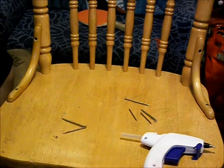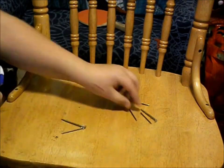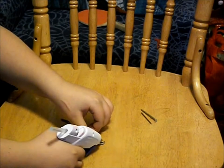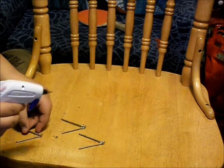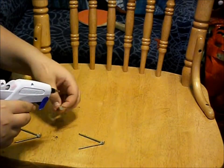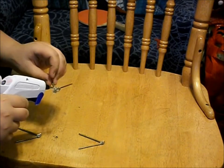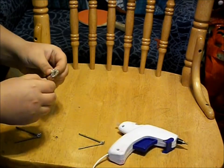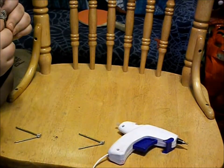First, you gotta take one of the small nails and one of the big nails and glue them together like that. That's gonna make the hook. You gotta do it to all three. Make sure they're glued on very good.